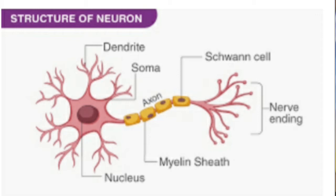The neuron consists of three parts: cytone, dendrites, and axon. The main part of the neuron is the cell body, called cytone. It is bounded from outside by a simple cell membrane, and its cytoplasm is called neuroplasm.